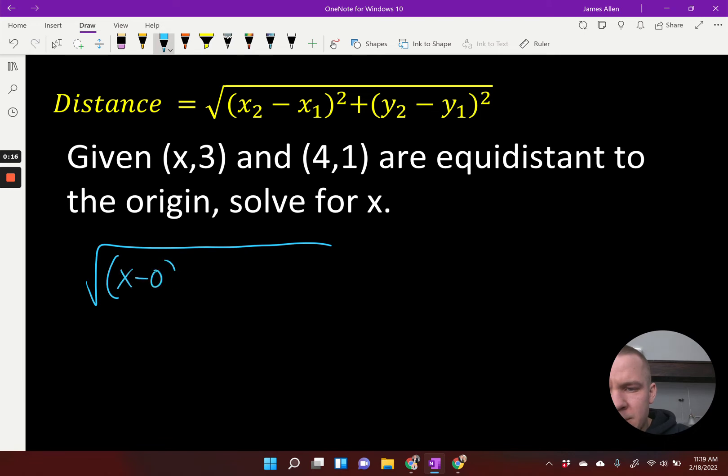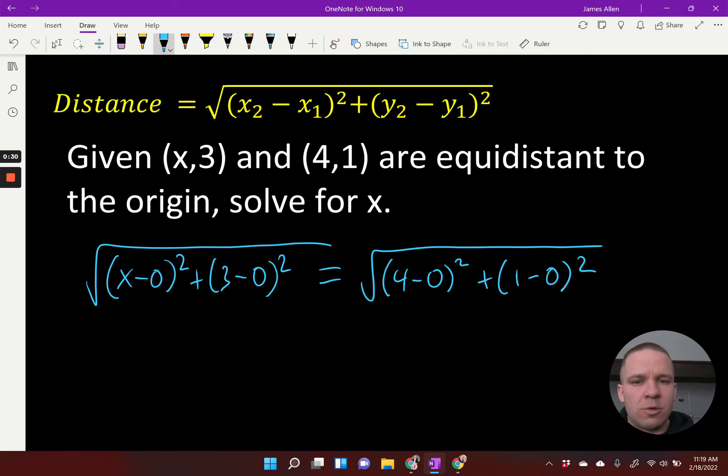So x minus 0 squared plus y, which is 3 minus 0 squared, that should be equal to 4,1 to the origin. So 4 minus 0 squared plus 1 minus 0 squared. So this here has (x,3) to the origin equal to (4,1) to the origin. So we have two distance formulas equal to each other.